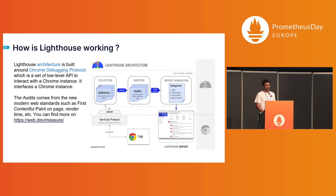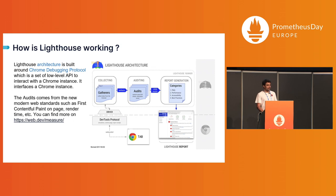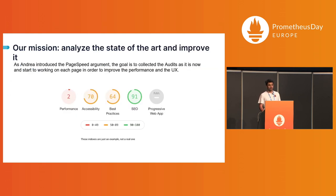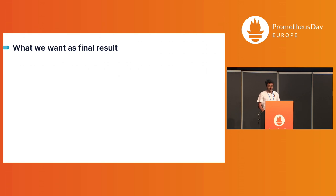Let me step back and explain how Lighthouse works. It's basically a pipeline for collecting metrics by visiting your pages. The script visits our pages, collects those metrics, and sends them to our Prometheus server and then to Grafana. The metrics we wanted to collect include performance, accessibility, best practices, and a couple of others.